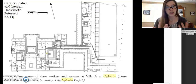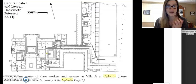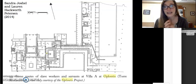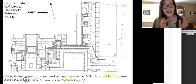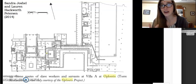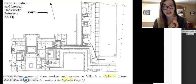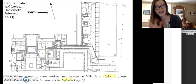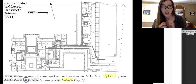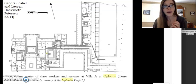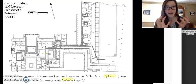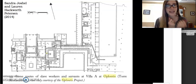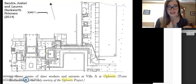One way to approach thinking about the views of non-elites in these elite domestic spaces is to think about circulation routes. This figure here is from a 2014 book written by Sandra Jo Shell and Lauren Hackworth Peterson, two scholars who work a lot on the viewing perspective and the daily life of slaves in these villa spaces, in these rich decorative environments.